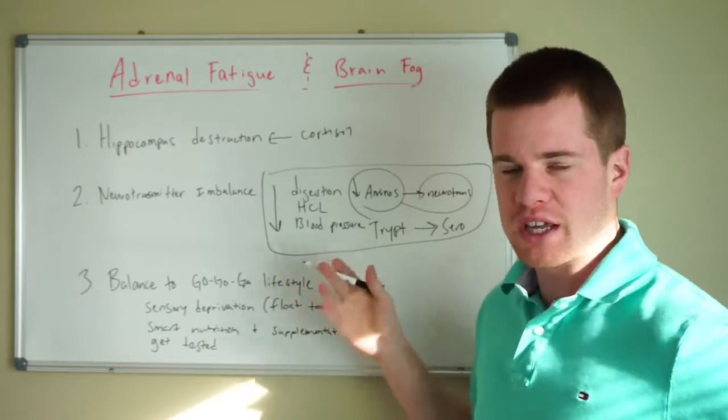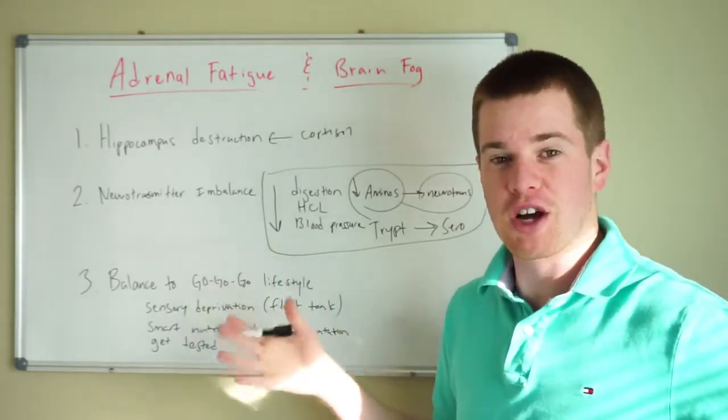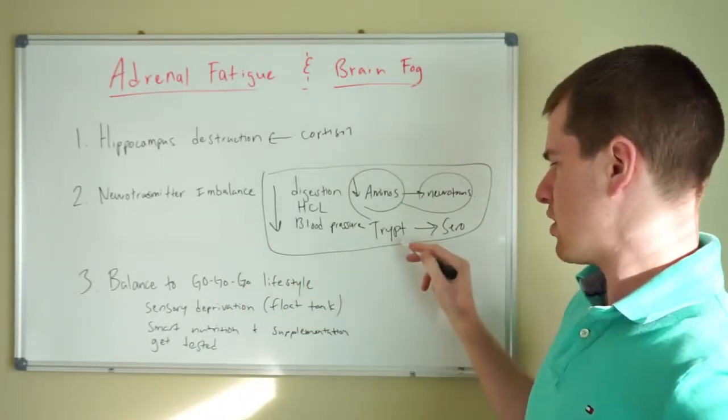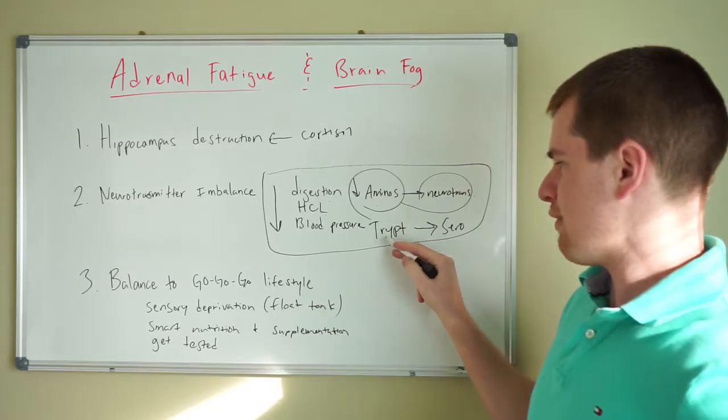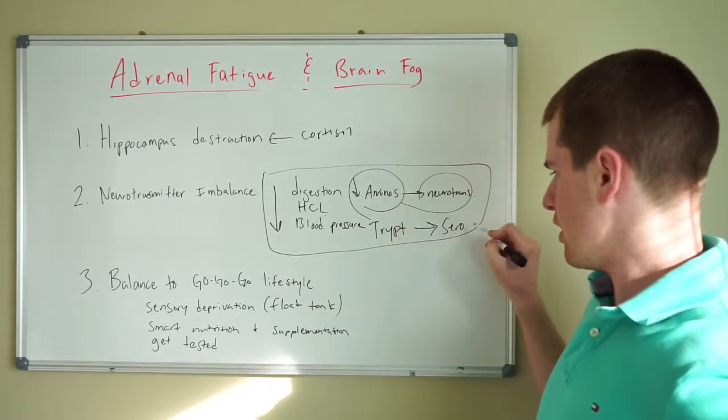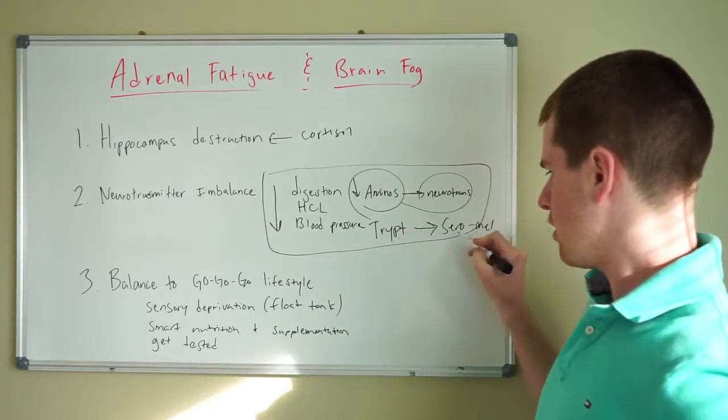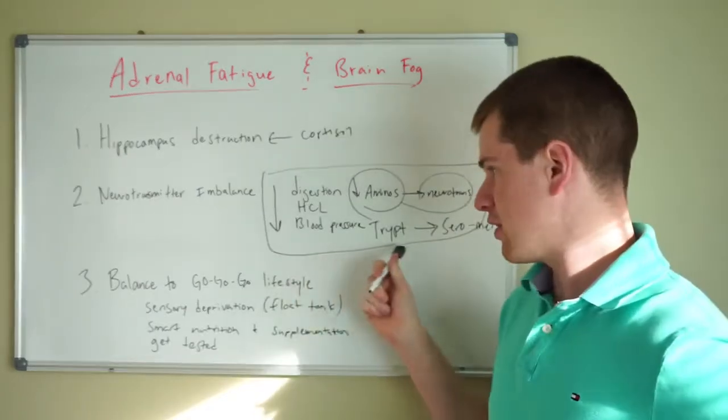You can take something like tryptophan. Dietary tryptophan that you would get from turkey, obviously a lot of people talk about turkey tryptophan. That's one source, there's many others. Tryptophan eventually gets converted over to serotonin, which I'm running out of room here, which gets converted over to melatonin.